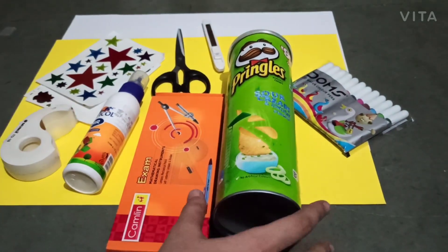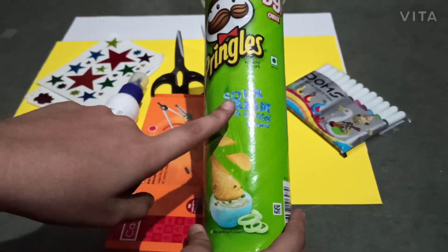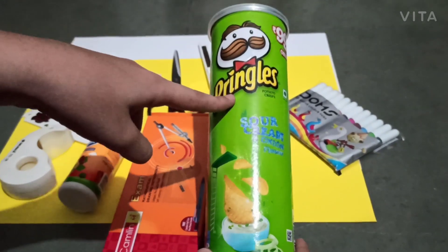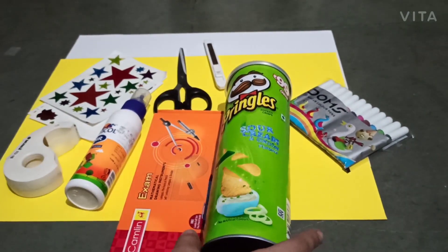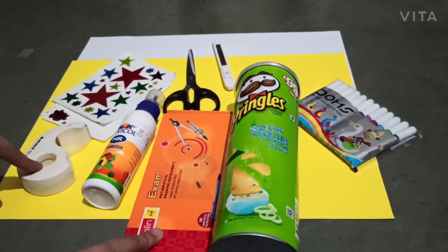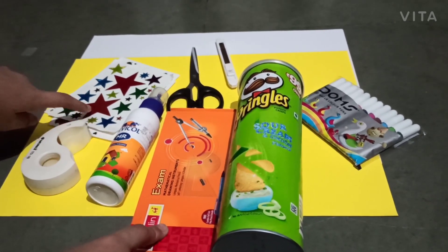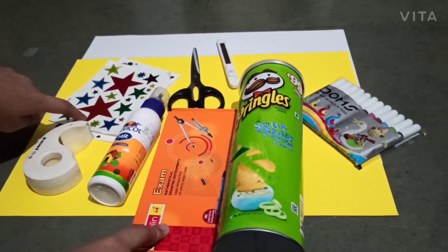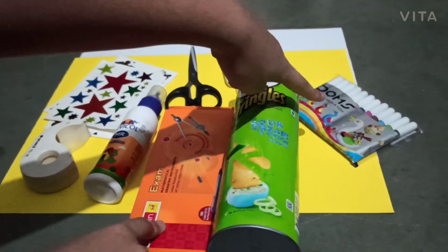Hello friends, today I'm going to show you how to make a piggy bank with this Pringles container. Let's start. For making it we need fabric glue, tape, decorations like stickers and sketch pens, scissors, cutter, rounder, and the main thing is the container.